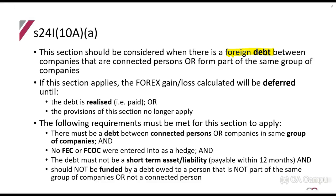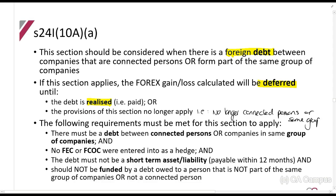If this section applies, you will have to defer the forex gain or loss until it is realized, or until the provisions of this section no longer apply — for example, when the parties are no longer connected persons or no longer in the same group of companies. So if this section no longer applies, you will also not defer.